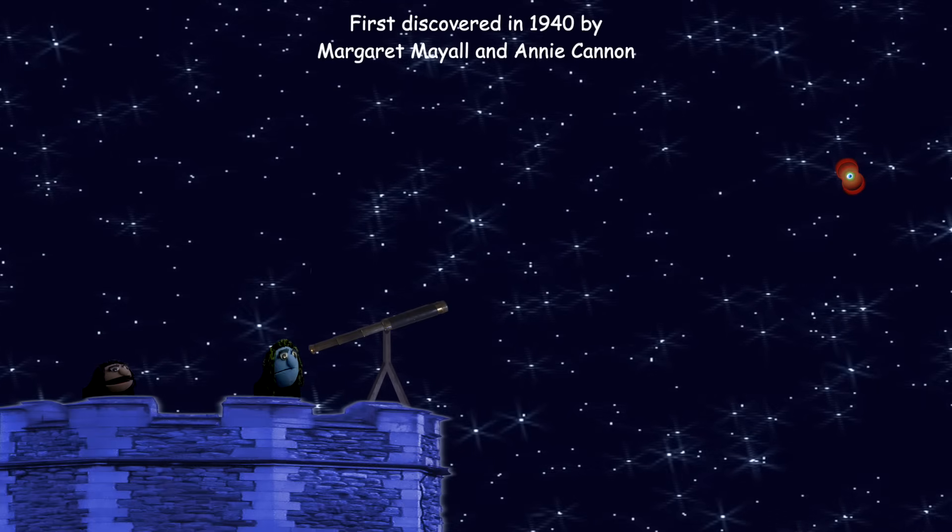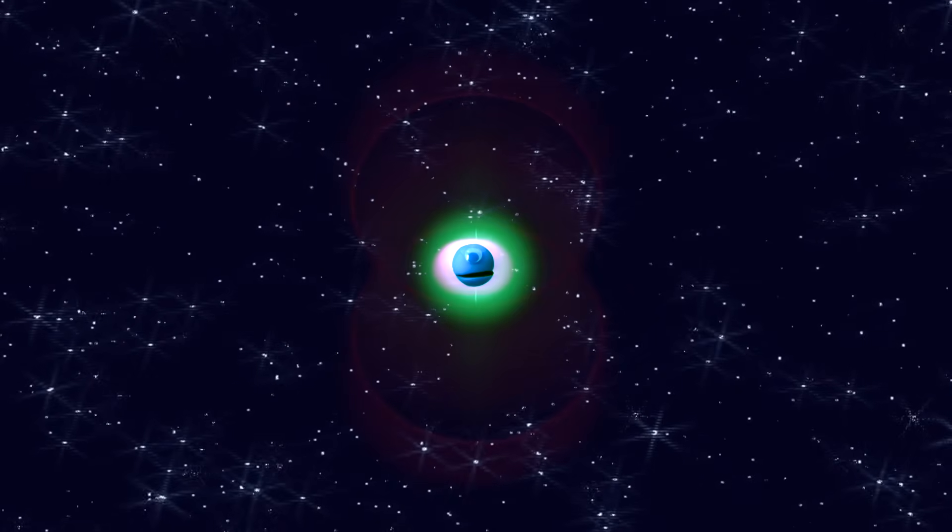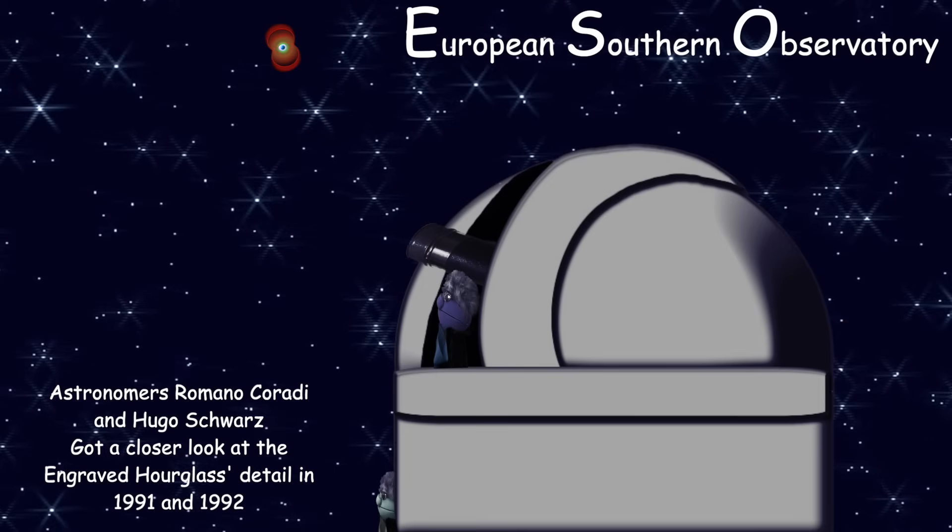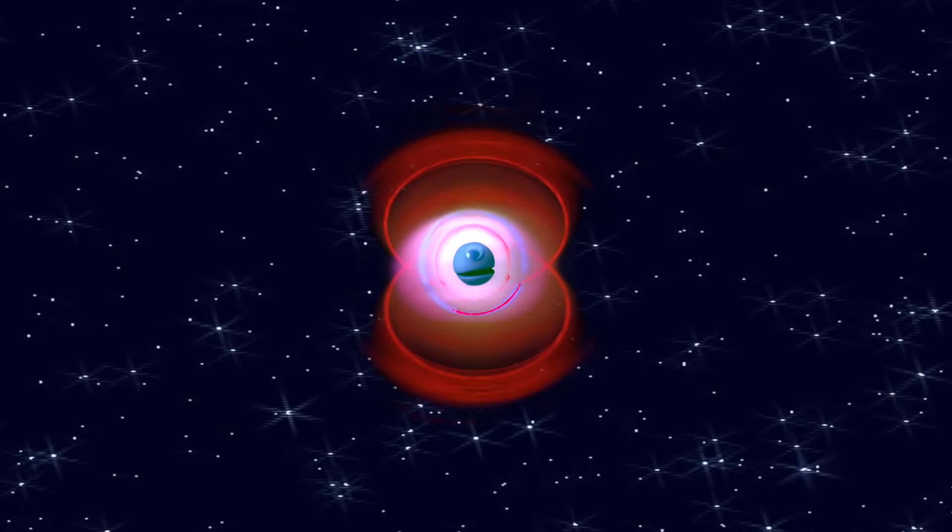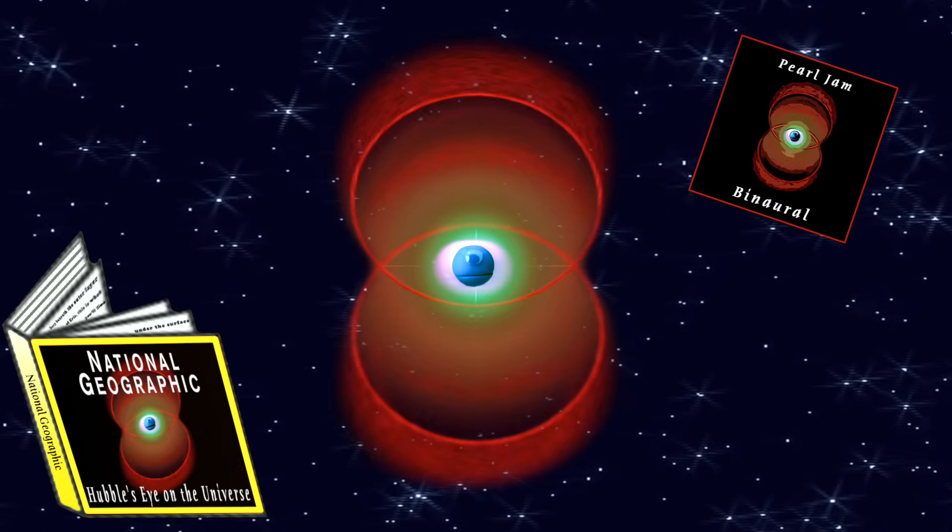Discovered by Annie Jump Cannon. At first my amazing hourglass shape could not be seen until scientists at the ESO took a closer look at me. The ejected outer layers of a dying red giant, an amazing sight is what I am. My image has been featured on National Geographic and on an album by Pearl Jam.